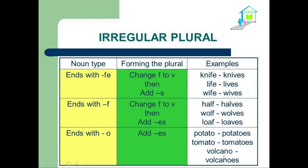We have here some irregular plurals. When we have a word or noun which ends with FE, we change the F into V, then add just S. For example: knife — we have this F, which changes into V — giving us 'knives.' Life → lives, wife → wives.